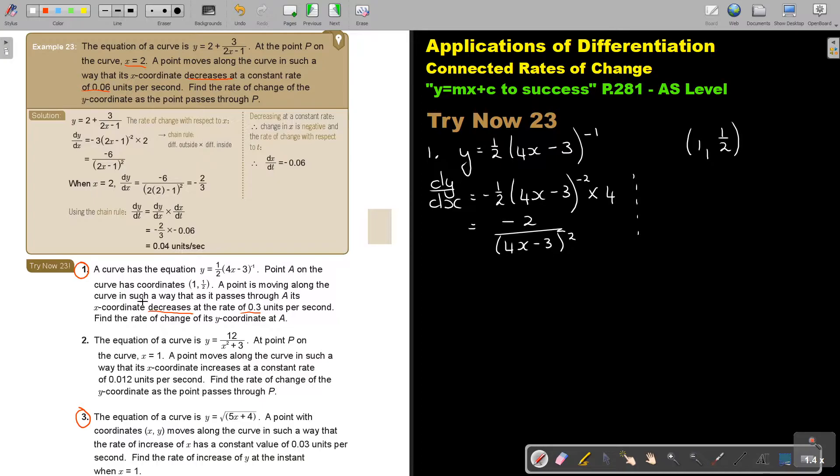So when X is 1, because you take the X value, then you substitute, and you get dy by dx, it's negative 2, and you're going to say 4, 1, minus 3, squared, and it's negative 2, and 4 minus 1 is 1, and 1 squared is 1, so it's just negative 2.